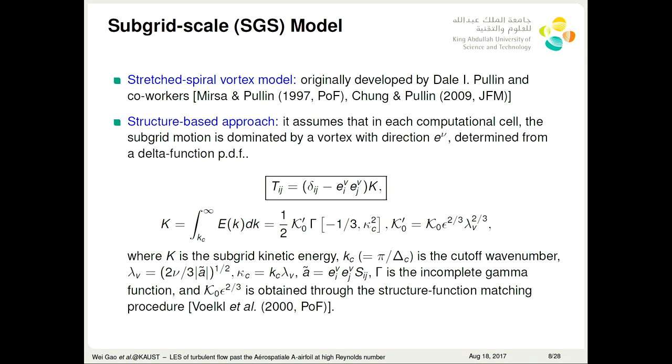The subgrid scale model we choose is the stretched spiral vortex model. This is originally developed by Dale Pullin and co-workers, and also extended to channel flow simulations. It is a structure-based approach. From the table, we can see that it relates the SGS stress with the subgrid kinetic energy. It assumes that in each computational cell, the subgrid motion is dominated by a vortex tube with an orientation, and this orientation is determined from a delta function PDF.